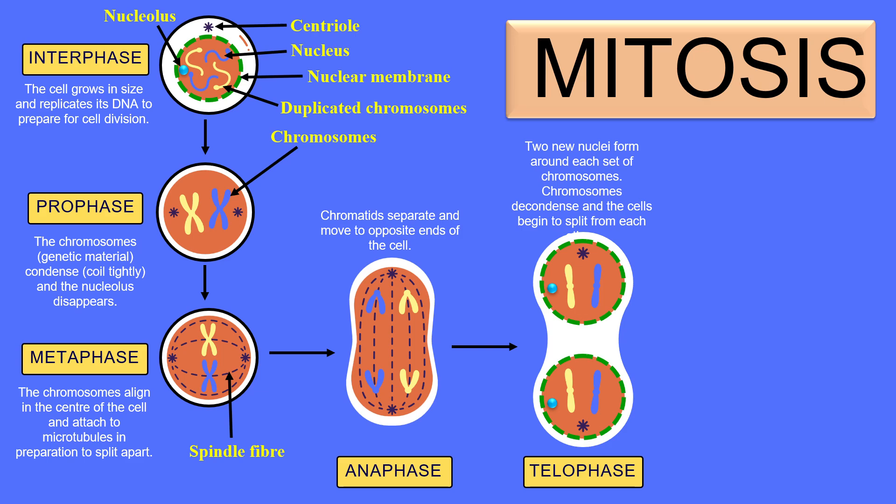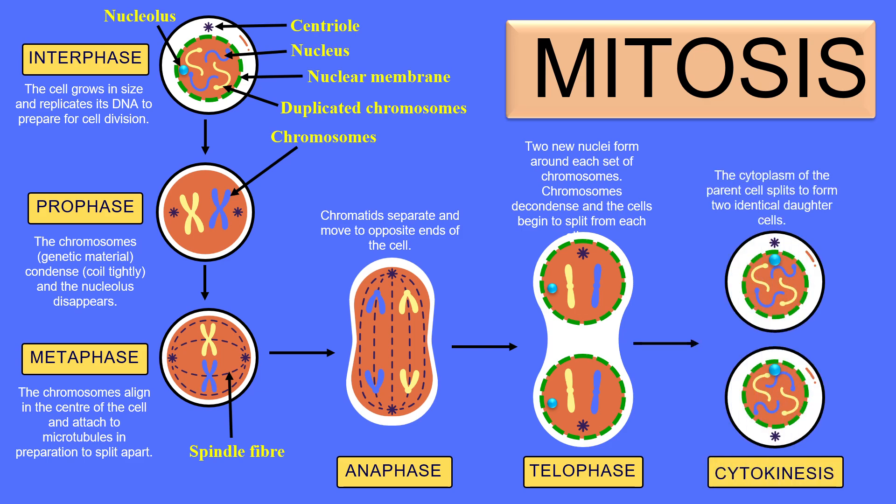The next phase of mitosis is cytokinesis, where cyto means cytoplasm and kinesis means division. After telophase we have two nuclei, but the cytoplasm has not yet divided. During cytokinesis the cytoplasm also divides, giving us two new daughter cells. These daughter cells have the same chromosome complement as the parent cell, which is why mitosis is also known as equational division.